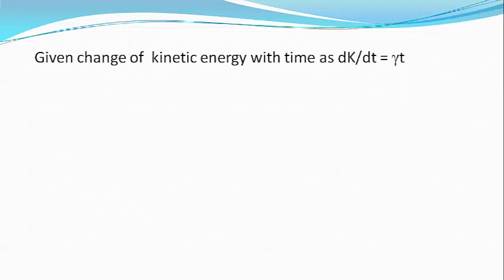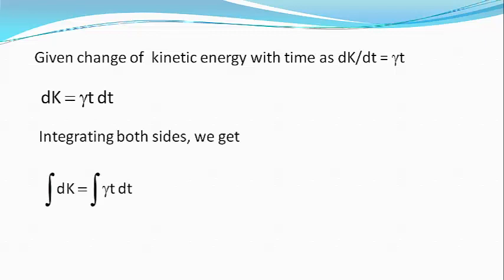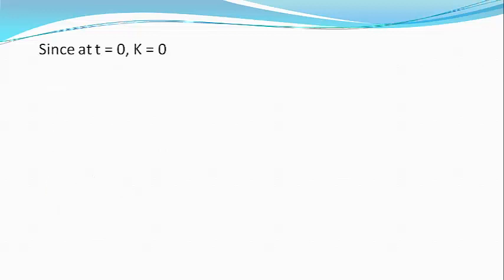Also given dK/dt equals gamma t, or dK equals gamma t dt. Integrating both sides, we get kinetic energy K. Since at t equals 0, kinetic energy is 0, so we get c double dash equals 0, or kinetic energy K equals half gamma t squared.